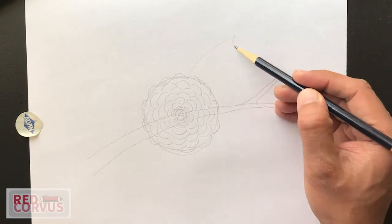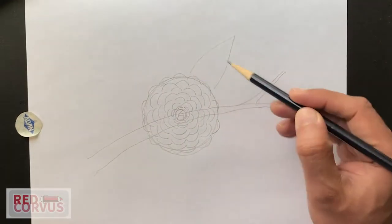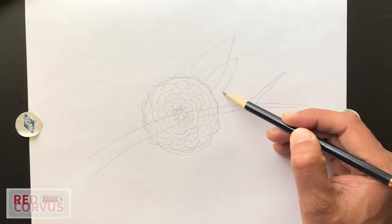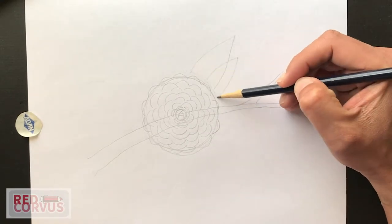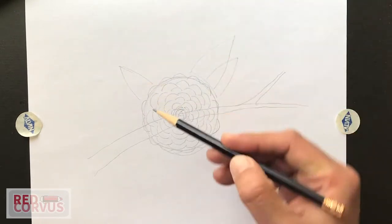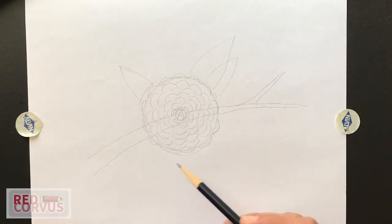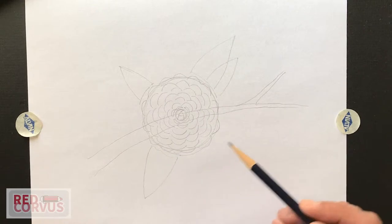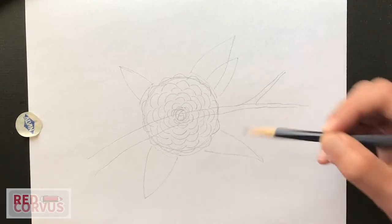I'm going to draw some leaves and arrange them randomly around the flower. And I can group them in twos or threes or draw them individually. And this one I'll draw a little bit twisted to make it different from the others.